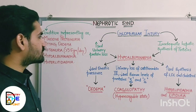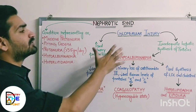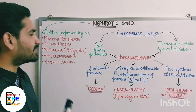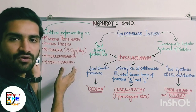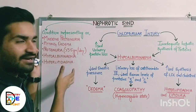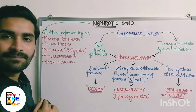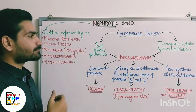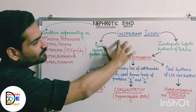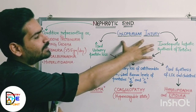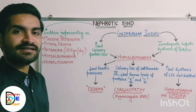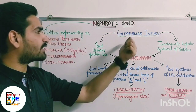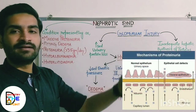Nephrotic syndrome is characterized by these four or five things. Now moving on to the pathogenesis of nephrotic syndrome — what is the main cause or reason a patient develops nephrotic syndrome? The main cause is glomerular injury.